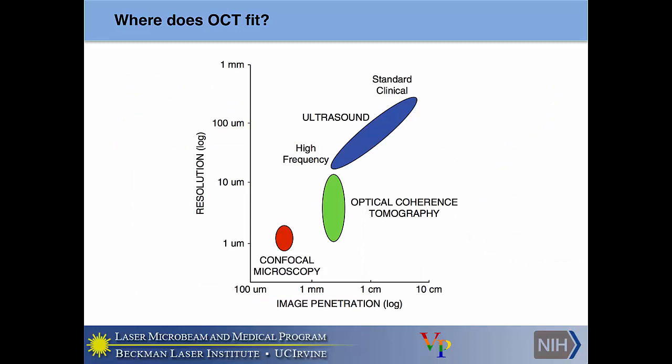Where does OCT fit in the grand scheme of things? Ultrasound at its highest frequencies — typically about 100 to 200 megahertz transducers — can reach axial resolutions of about 15 microns, but you have a severe trade-off in penetration depth of about 2 to 3 millimeters. Confocal microscopy can provide sub-micrometer, near nanometer resolution, but in scattering tissue you're lucky to get up to 1 millimeter penetration. OCT clearly fits within this scheme, where there are macroscopic tissue structures you'd want to study in vivo that you couldn't visualize with confocal or with sufficient resolution using ultrasound.